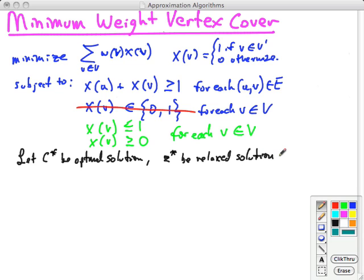So we want to know the relationship between these two. Well, first of all, the solution C* involves assigning some integer values to the variables. That must be a feasible solution to the relaxed linear program. The relaxed program can assign integer values to variables, but it's allowed to also go to non-integer values. So C* is in the feasible region for the relaxed program. And it's possible that when you relax it, you can get a better minimization. So this gives us the bound that Z* is a lower bound on the weight of C*.